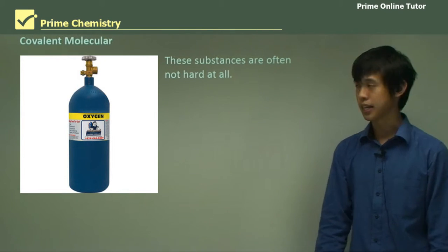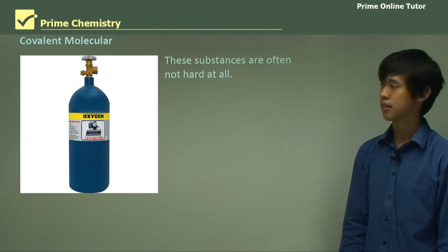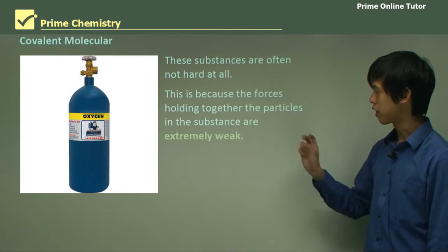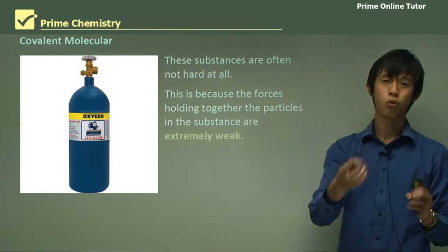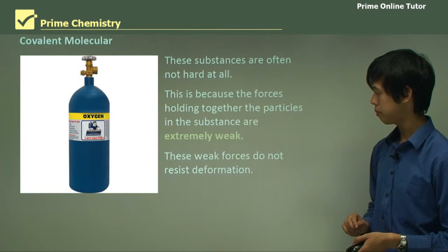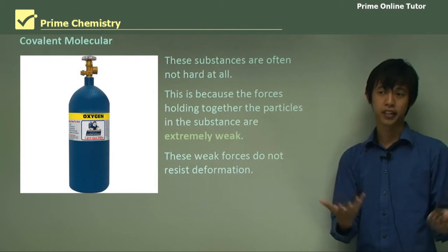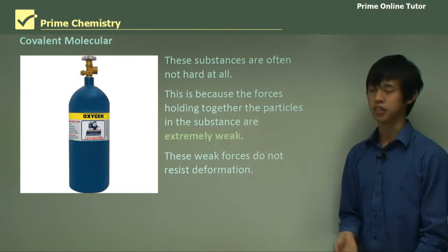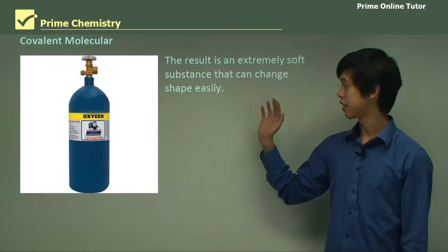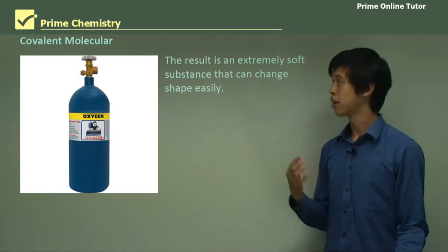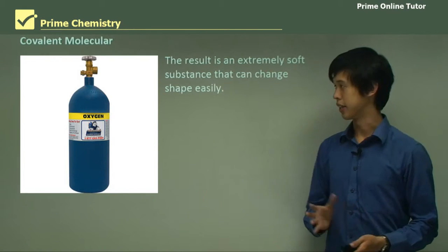Covalent molecular substances are often not hard at all. This is because the forces holding the particles in the substance are extremely weak — individual molecules are held together with very weak forces that don't resist deformation. They end up just taking the shape of whatever container they're in, resulting in an extremely soft substance whose shape can change very easily — although not always permanently, since many of them are gases.